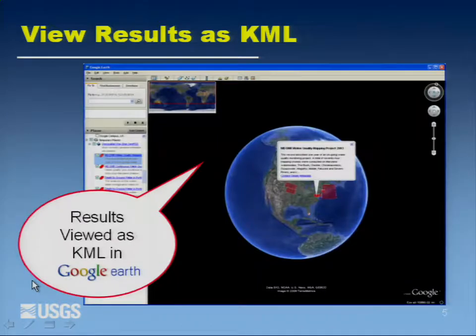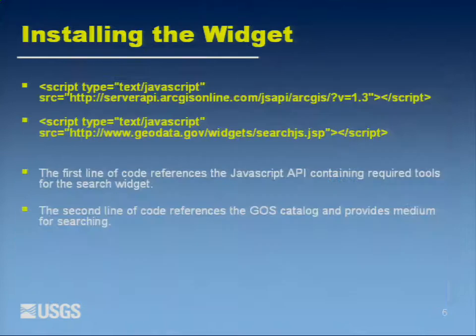And also increasingly popular — seeing your search results in KML and Google Earth — and you can see the geographic footprint there as defined. That's the bounding box in the metadata record.